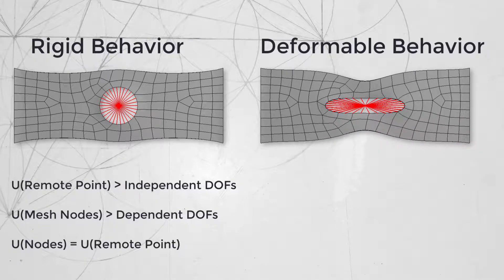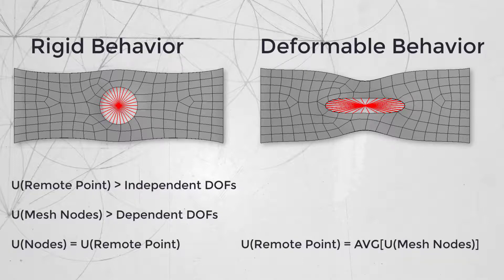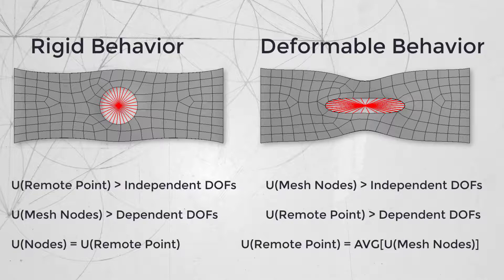Deformable behavior may be thought of as the opposite extreme. In this case, the pilot node must follow the motion of the nodes of the scoped geometry, so the region between the pilot node and the scoped geometry is not infinitely stiff. Instead, we are essentially limiting the motion of the pilot node to be the average movement of the nodes of the scoped geometry, and the pilot node has dependent degrees of freedom while the nodes of the scoped geometry have independent degrees of freedom. Deformable behavior in general would provide more accurate results. However, since we don't expect much relative deformation occurring under the bolt head, a rigid behavior can be fine too, especially because the rigid option uses fewer independent degrees of freedom and therefore is less computationally expensive.